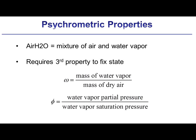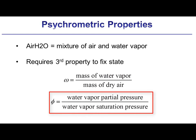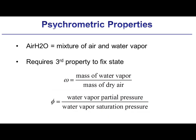This third property must somehow be related to the concentration of water vapor. The amount of water vapor can be quantified in terms of its humidity ratio, which is defined as the mass of water vapor to the mass of dry air. It could also be defined in terms of the relative humidity, which is defined as the ratio of the vapor pressure of the water to the saturation vapor pressure of water at the same temperature — basically how close the mixture is to being saturated.